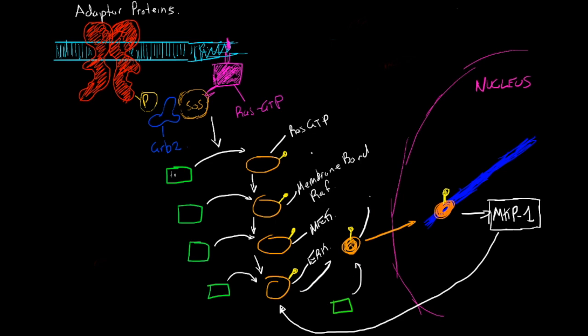So right here, this is a transcription factor which will go into the nucleus and turn on genes involved in cell proliferation. One of the genes they can activate is called MPK1, which is a phosphatase.